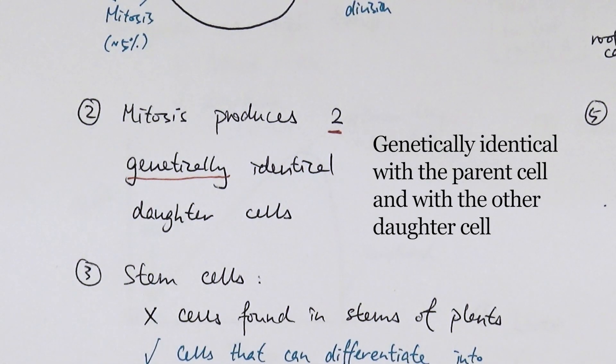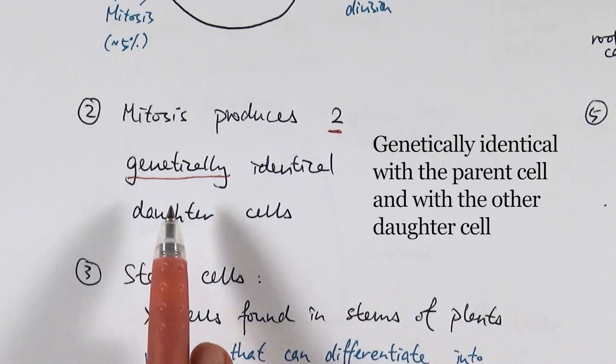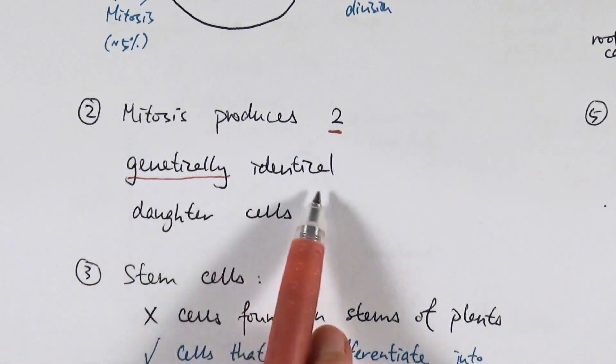So you have to say that DNA is exactly the same in both of those offsprings and it's exactly the same as the parent cell. So make sure you know and you include the word genetically in with identical.